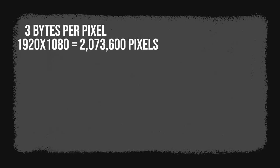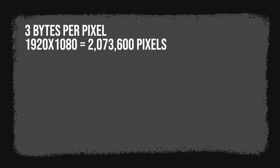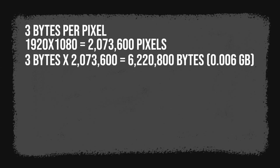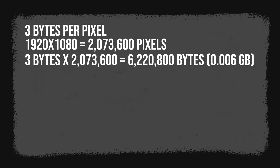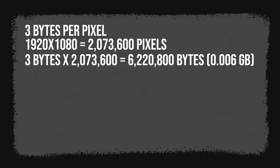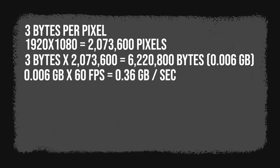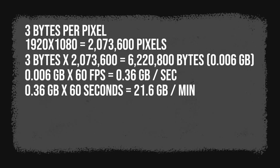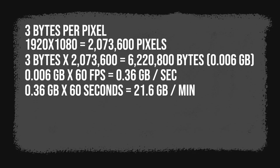Here's some quick math as to why. Each pixel stores color in three bytes. A 1920x1080 screen is 2,073,600 pixels. With three bytes per pixel, that's 6,220,800 bytes — 0.006 gigabytes for a single frame. That doesn't sound too bad. Now multiply that by 60 frames per second, then multiply that by 60 seconds in a minute, and you're sitting at 21.6 gigabytes per minute. Not so great anymore.